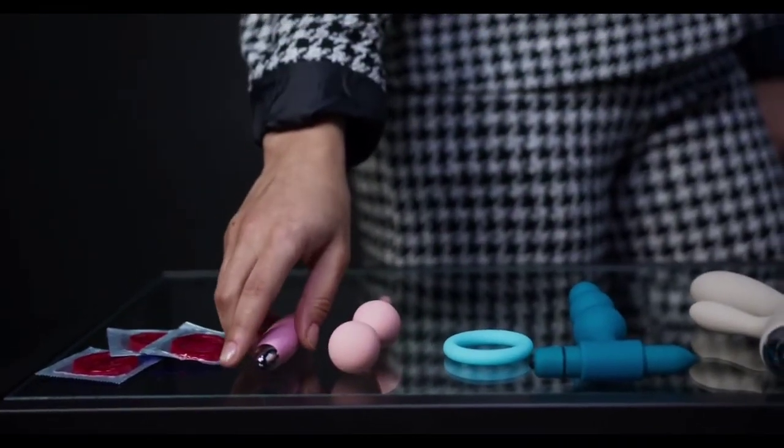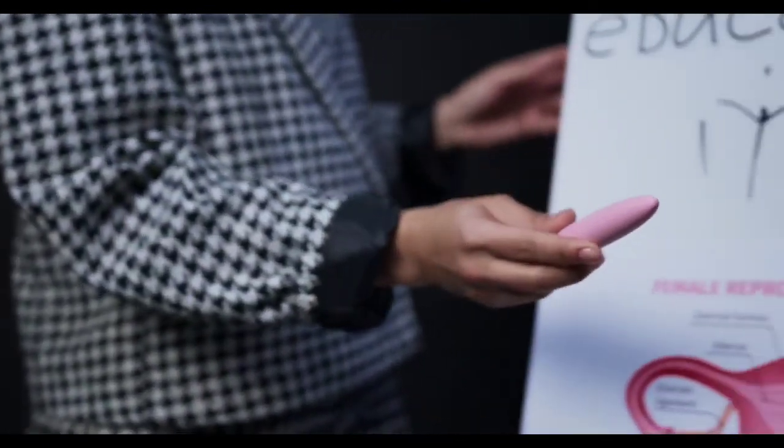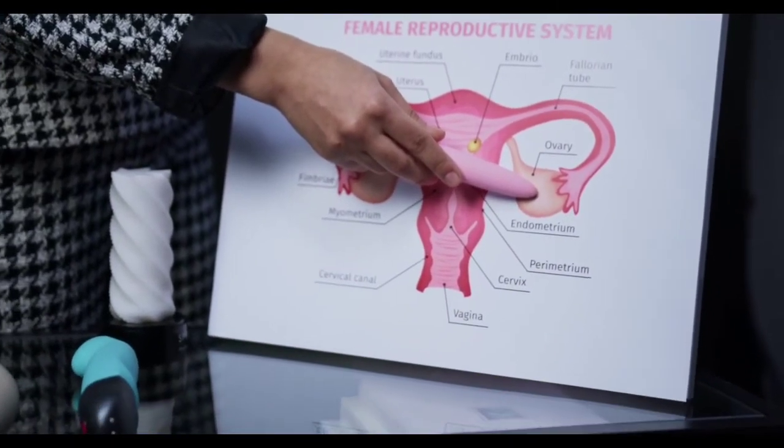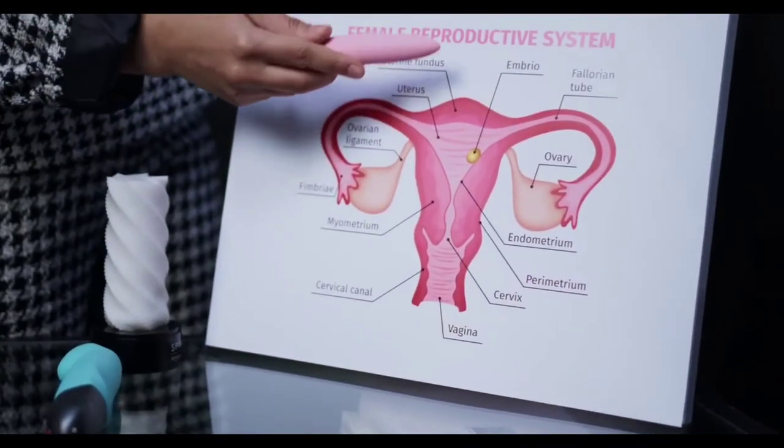Eating yogurt with active cultures, check the label, might help you get fewer infections. Condoms are the best way to prevent passing infections between sexual partners. Get a complete gynecologic exam every year, including a pap smear if your doctor recommends it.